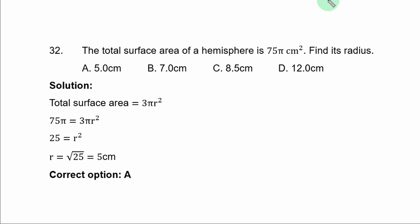Question 32. The total surface area of a hemisphere is 75π square centimeters. Find its radius.